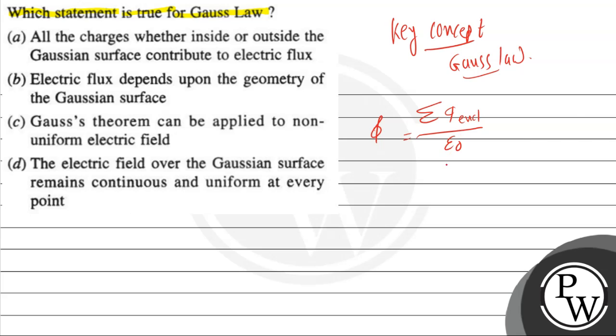So if we select any enclosed charge for any surface, suppose a given one: capital Q1 charge here, minus Q2, Q3, plus or minus whatever, then the resultant field will be outside or inside—it depends on the inside enclosed charge.